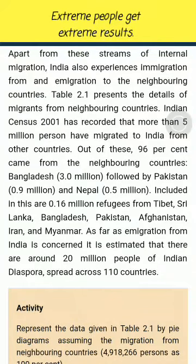The Indian Census 2001 has recorded that more than 5 million persons have migrated to India from other countries. Out of these, 96% came from neighbouring countries: Bangladesh (3.0 million), followed by Pakistan (0.9 million) and Nepal (0.5 million). Included in this are 0.16 million refugees from Tibet, Sri Lanka, Bangladesh, Pakistan, Afghanistan, Iran and Myanmar.